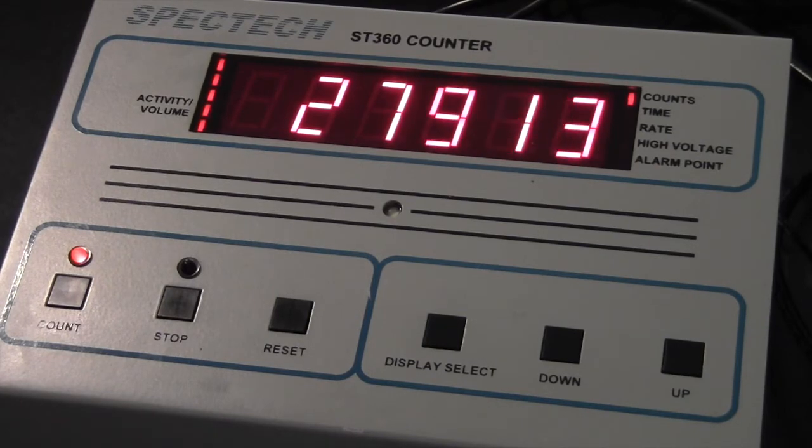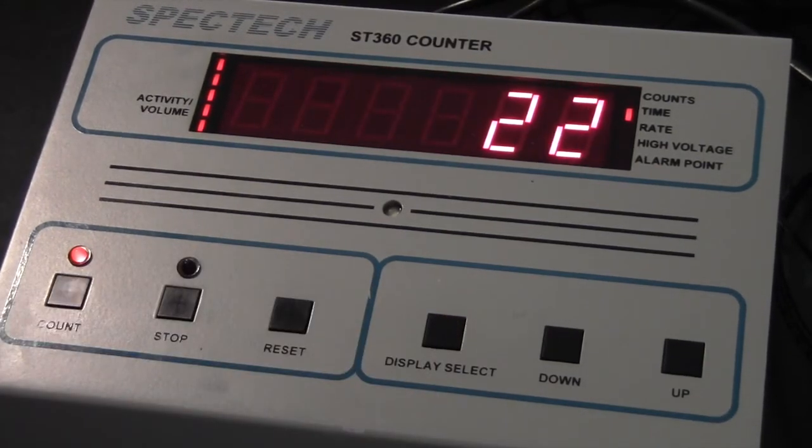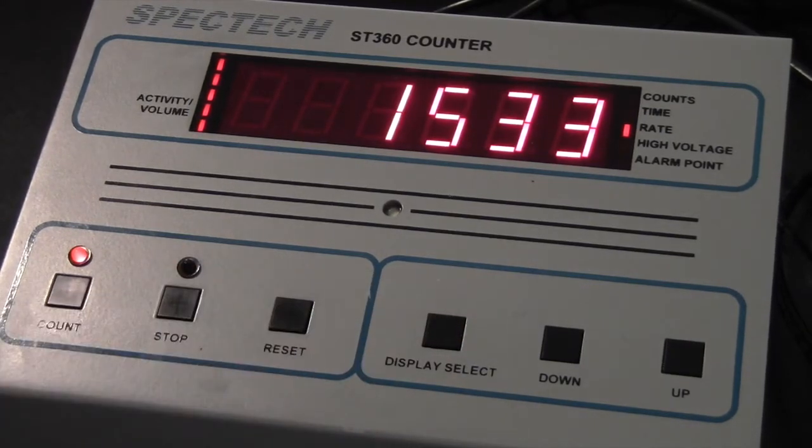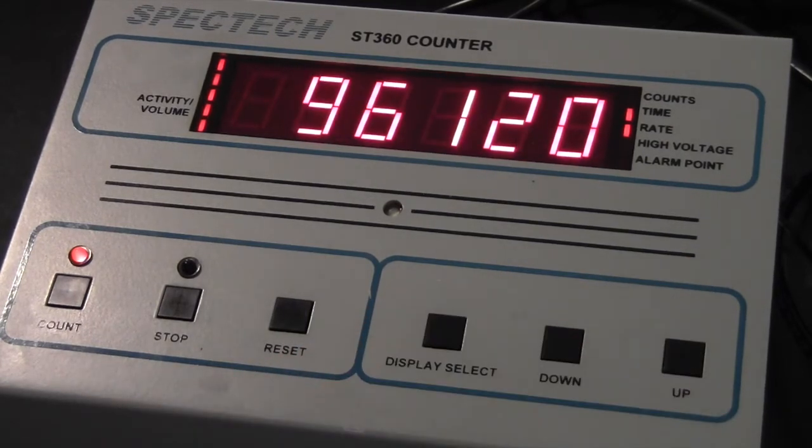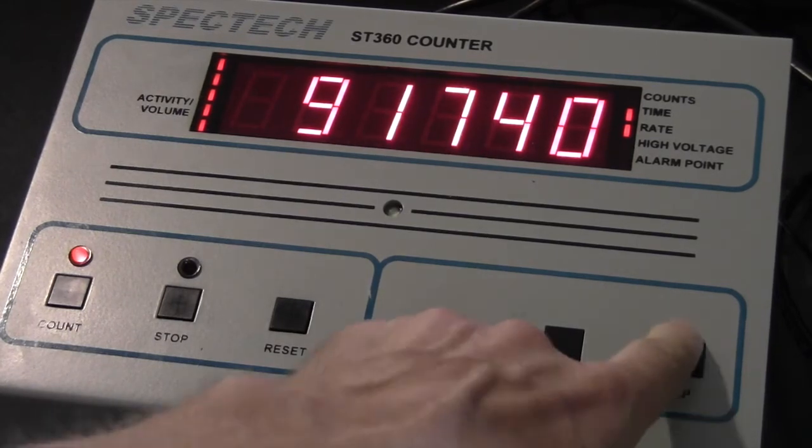If we toggle the mode to time, this is the time that has elapsed. It's ongoing right now. And the rate, that is in CPS counts per second, hovering around 1500 CPS. If I press the up or down button, I get CPM counts per minute. We'll go back to CPS.